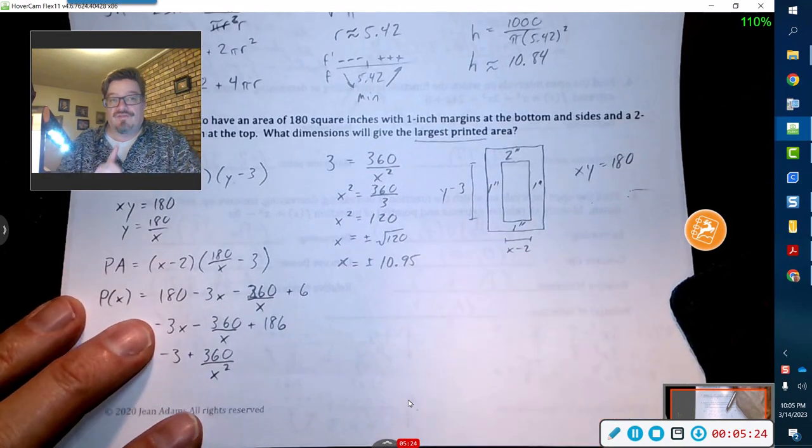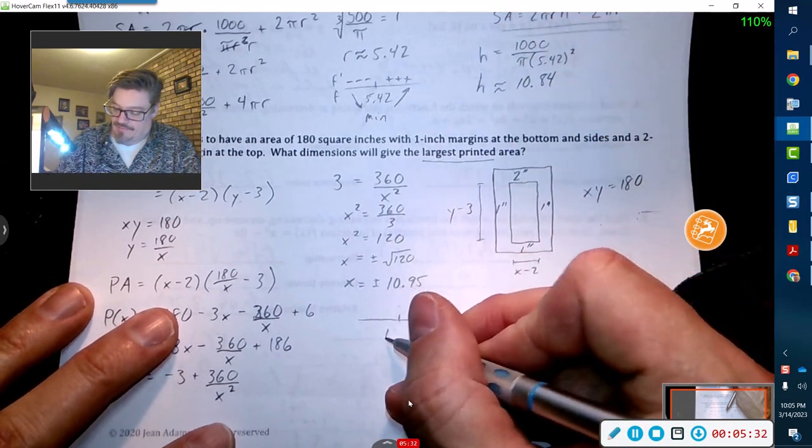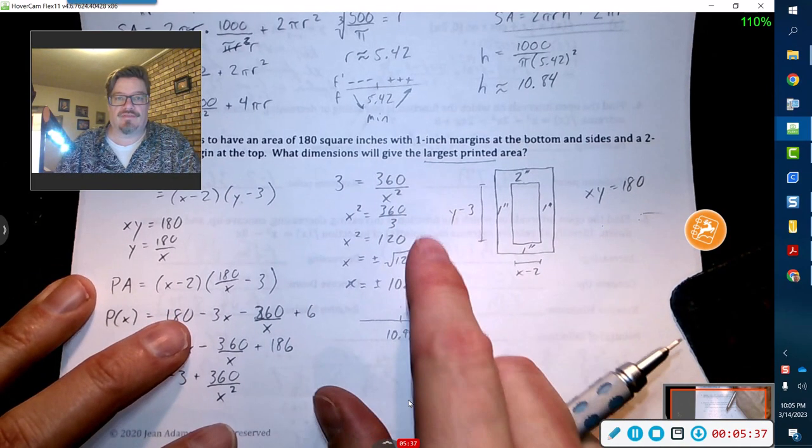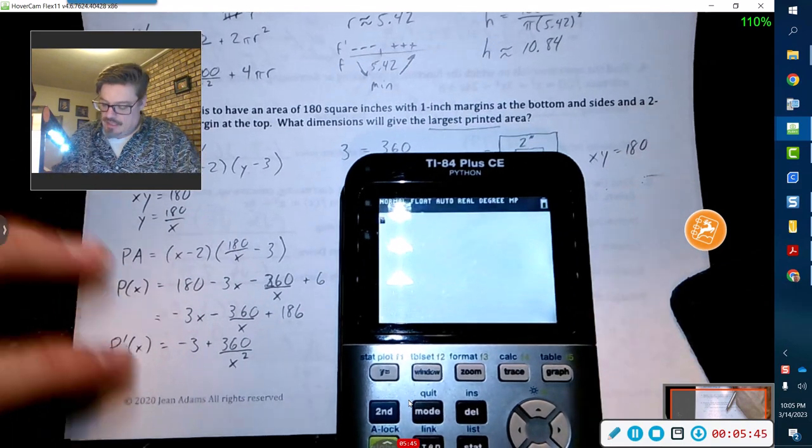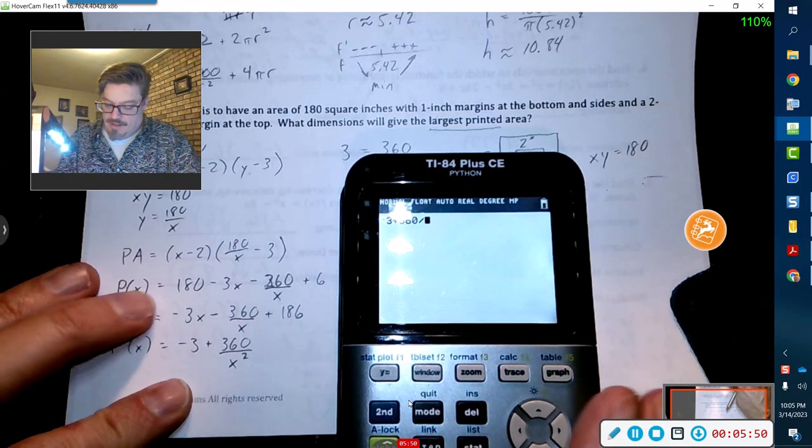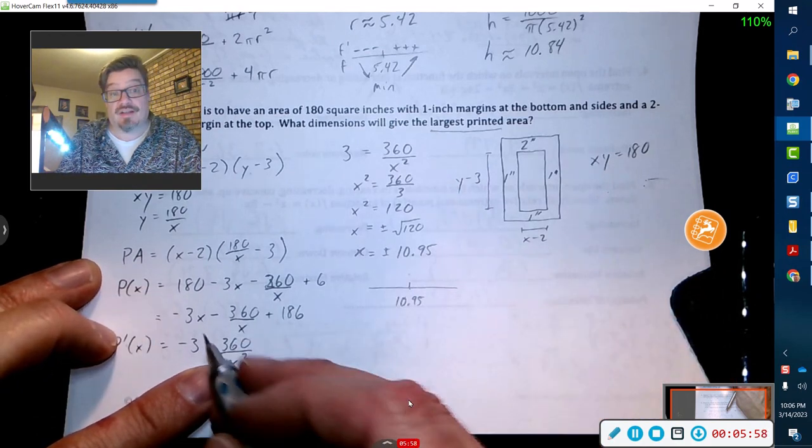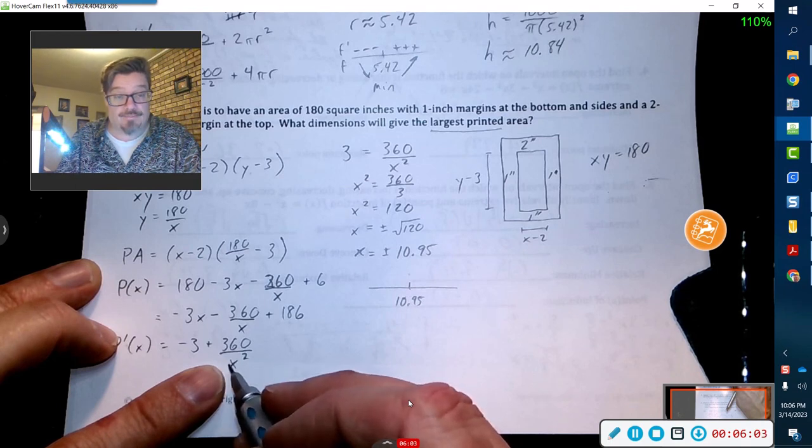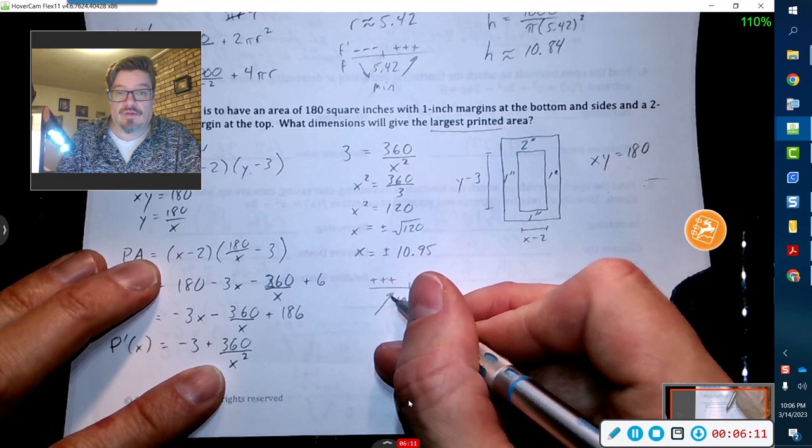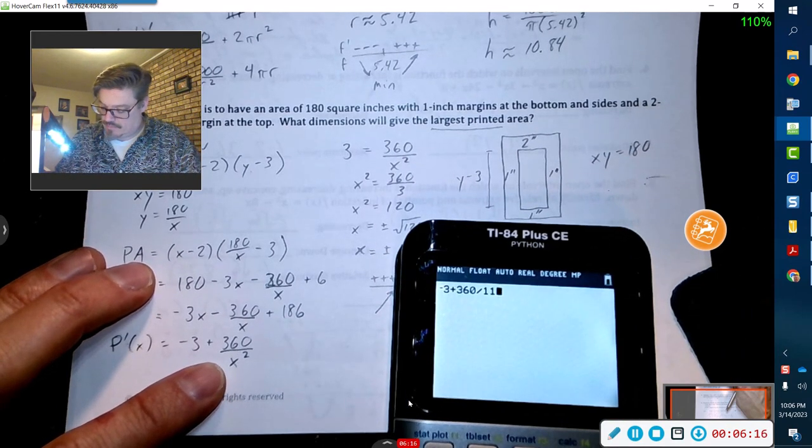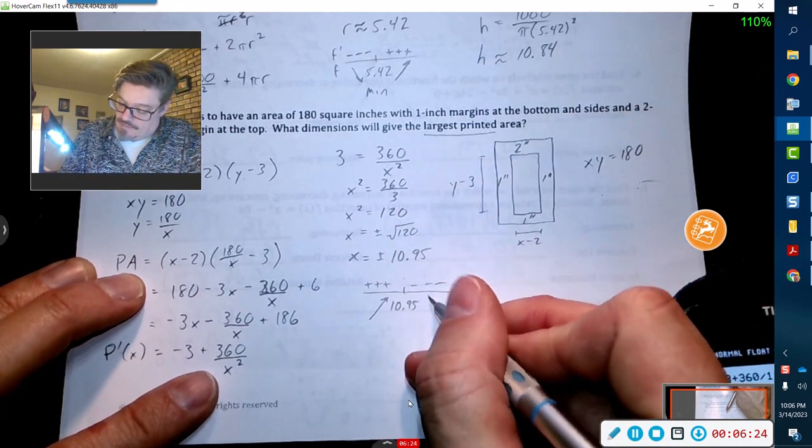Alright, and let's just verify that is going to be a maximum. We got to put 10.95, I know you want to round up to 11, but I'm going to use 11 actually to determine if this is going to be positive or negative. Negative 3 plus 360 divided by 11—if I put in a 1 it would be positive, increasing. And then if I were to put in an 11, it's negative, just barely negative. So that is negative, and there we go, that is a max.